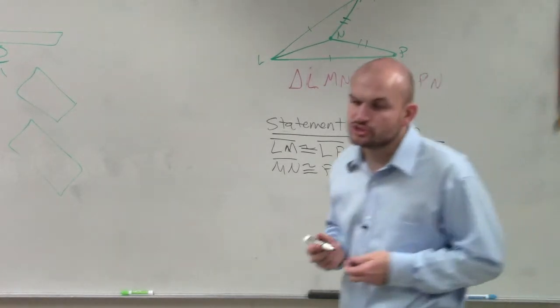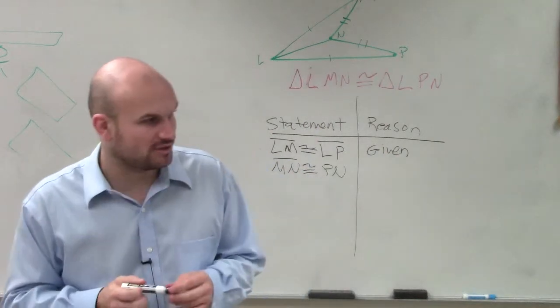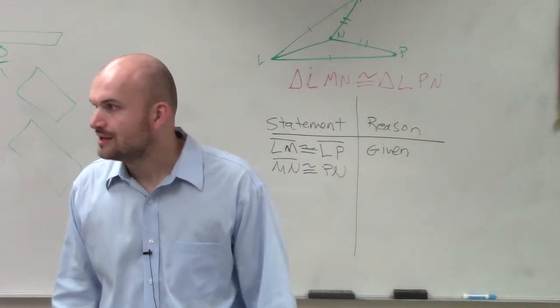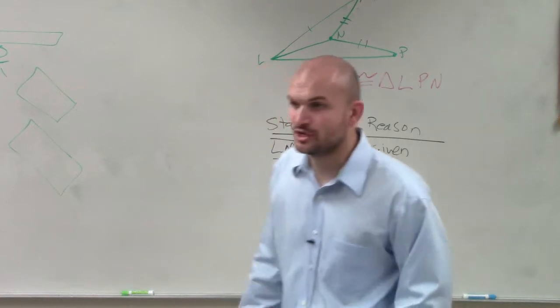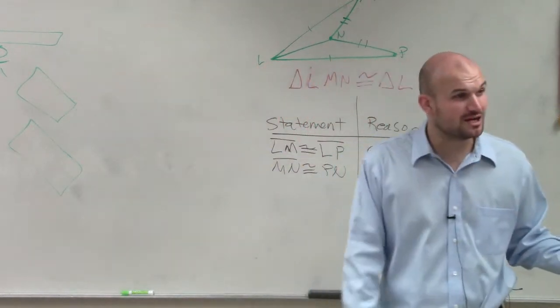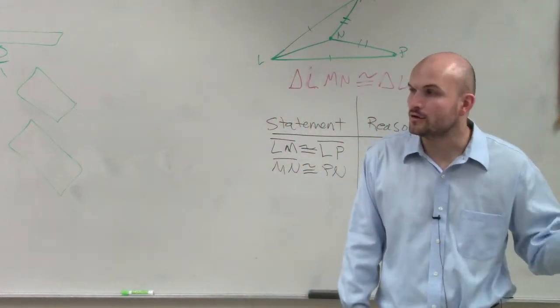But now what we're trying to do is determine: are these triangles equal to each other? The only way we're going to be able to determine if they're equal to each other is the two different congruencies we've talked about: side-side-side, or side-angle-side.